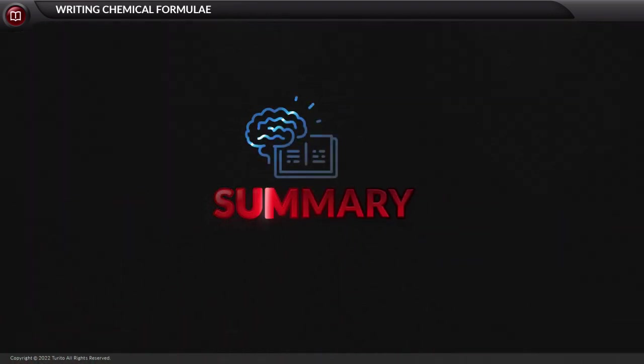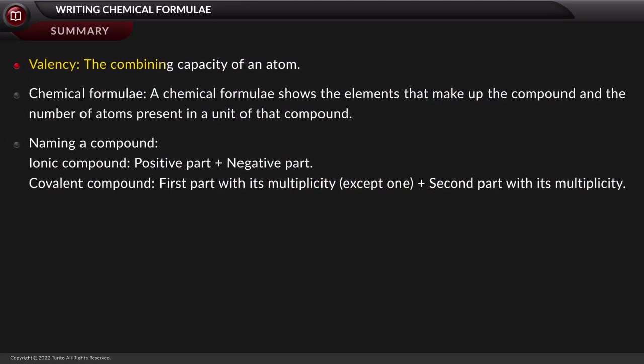As we reach the end of the module, let us summarize. First, we revised valency, which is the combining capacity of an atom.